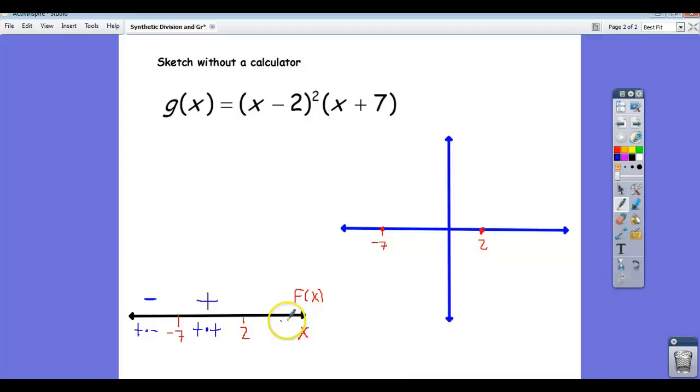Now I pick a number to the right of 2. How about 3? 3 minus 2 is 1 squared, that's a positive number. And then 3 plus 7 is 10, which is positive. And a positive times a positive is a positive.